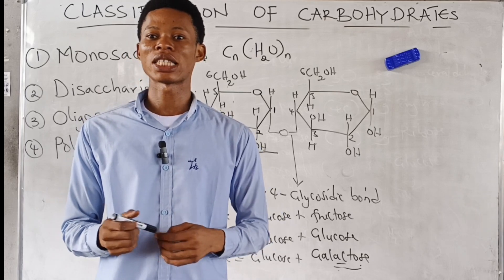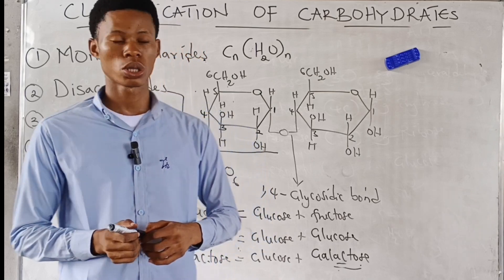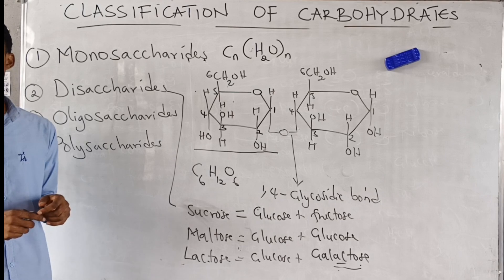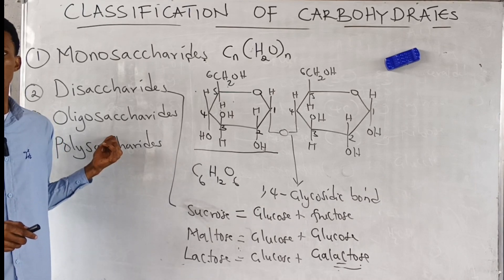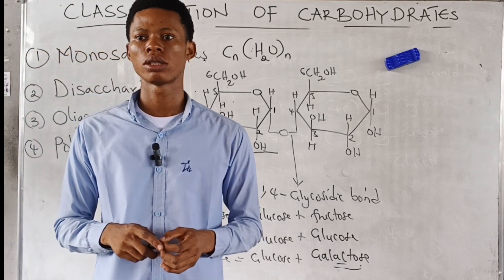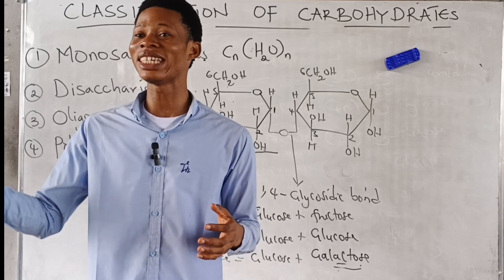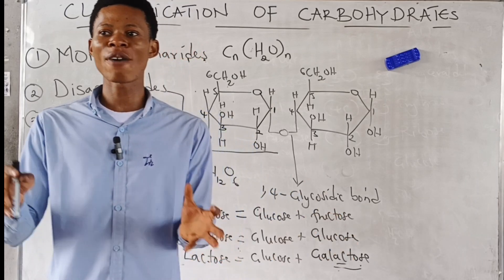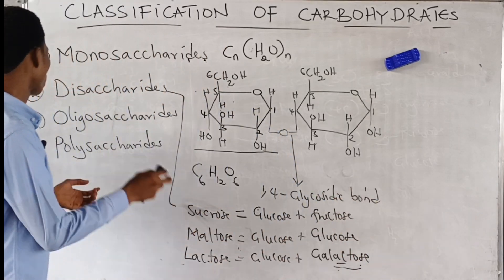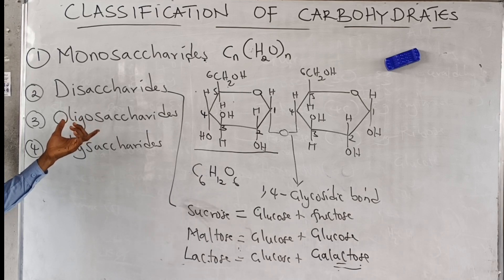Oligosaccharides — oligo means few. So oligosaccharides have few sugar units. The range of sugar units found in oligosaccharides is from three to ten. If we have three, four, or five sugar units, that gives us oligosaccharides.